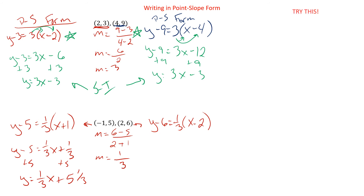So writing in point-slope form: we still find the slope, we still need a starting point, we just plug it into the equation a little differently. Now it's your turn to try one. Try this: 1 comma 4 and negative 3 comma 12. Find the slope, write it in point-slope form using one of the two points. And if you're feeling brave, see if you can write it in slope-intercept form. Go ahead and pause, then start it up again when you're ready.